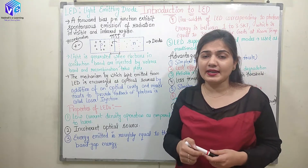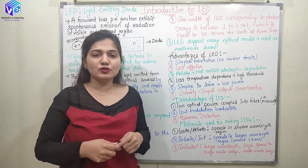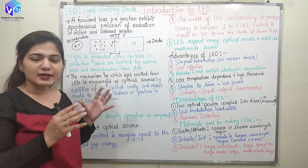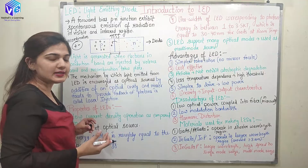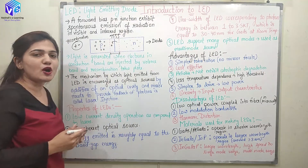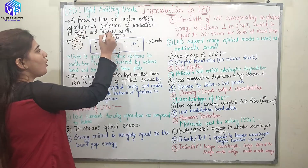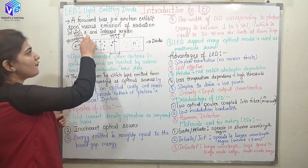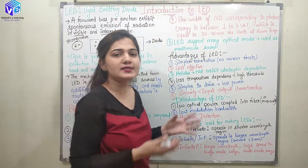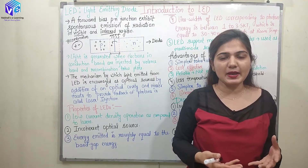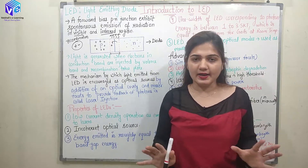The energy emitted can be in the form of heat or in the form of light — we'll discuss that in detail in the next video. Here we are considering all of the energy is emitted in the form of light, and this is the working principle of the LED. The energy is released in the visible or the infrared region. A forward-biased P-N junction exhibits spontaneous emission of radiation as soon as current is applied, in the visible or IR region.